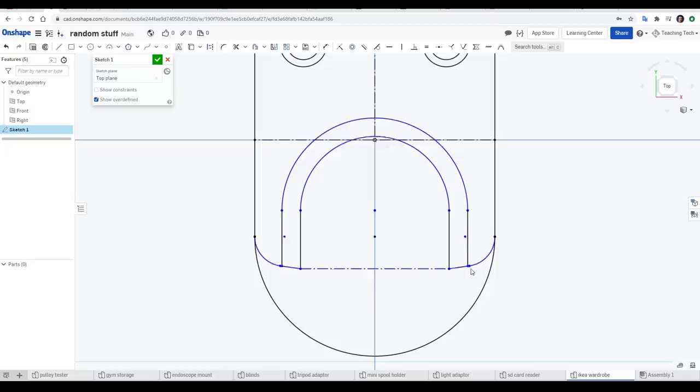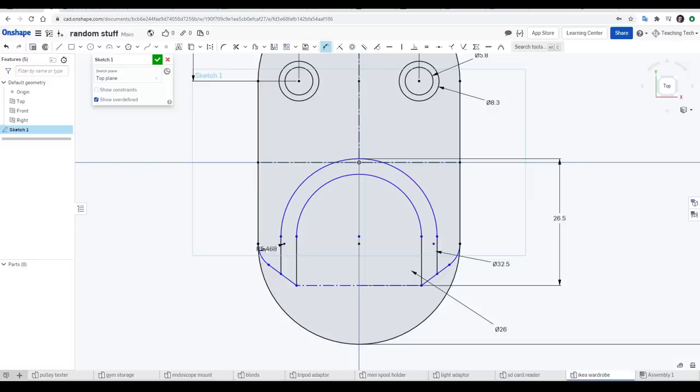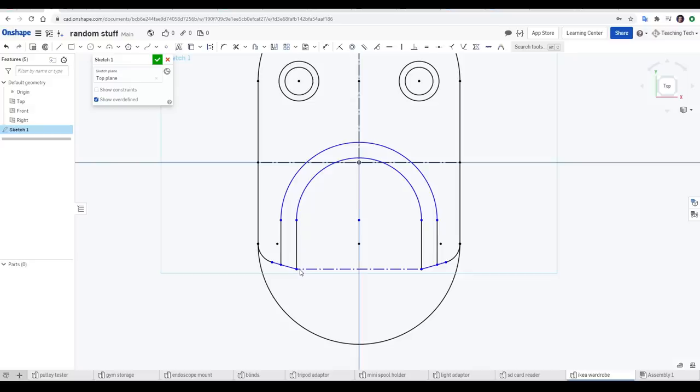Fortunately, most CAD software will let us drag anything unconstrained into a better position. As you dimension geometry that is hard to measure in real life, use trial and error until it's visually quite similar, and then drag parts into position to get it closer still.